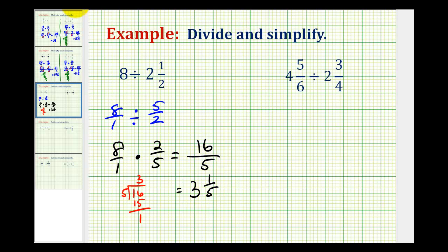Let's take a look at a second example. Again, the first step is to rewrite these mixed numbers as improper fractions. So for 4 and 5 sixths, we'll have 6 times 4, which is 24, plus 5, that's 29 sixths.